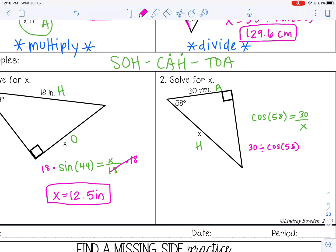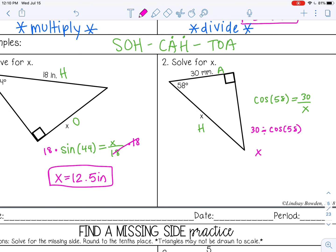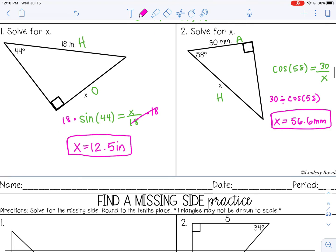And then when you type that in your calculator, you get 56.6 millimeters. And that is the length of the hypotenuse. You can stop the video now and go ahead and complete Find a Missing Side Practice and check it with your teacher.